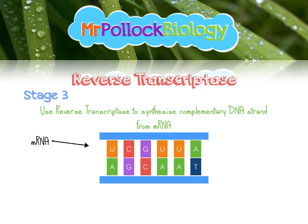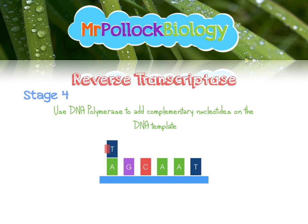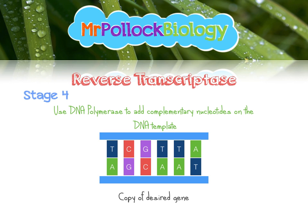We can call this cDNA, where the 'c' stands for complementary. In the fourth stage we use another enzyme — DNA polymerase — to add complementary nucleotides onto that cDNA template. This gives us a copy of our desired gene, which we can use to synthesise large amounts of protein. We'll look at that in a different video.